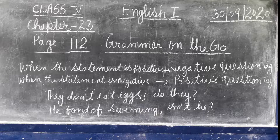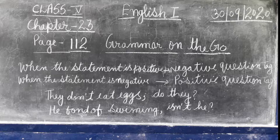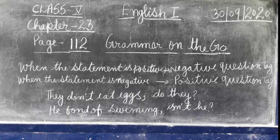When the statement is positive, the question tag will be negative. When the statement is negative, the question tag will be positive. For example: 'They don't eat eggs, do they?' — positive question tag because the statement is negative. 'He is fond of swimming, isn't he?' — negative question tag because the statement is positive.